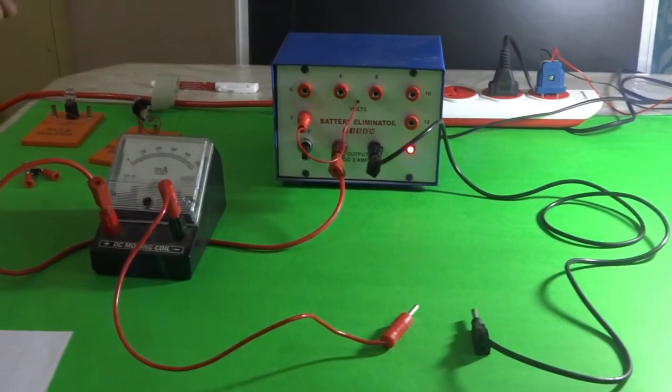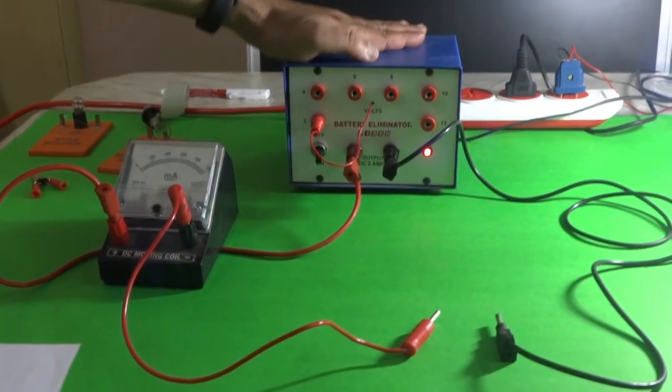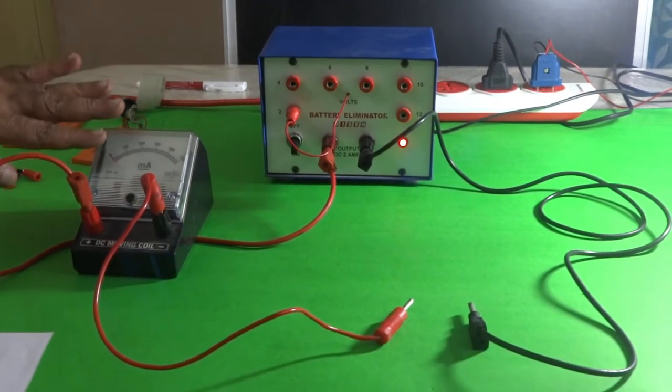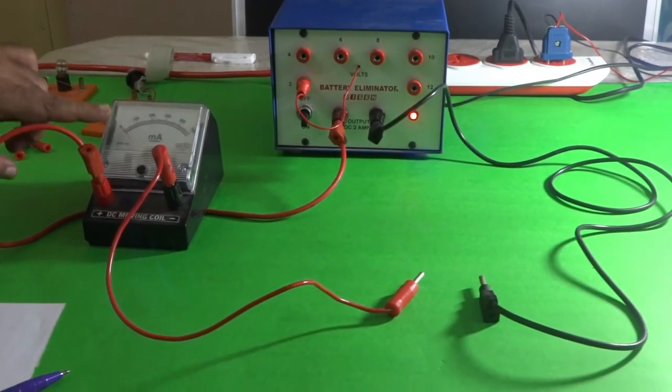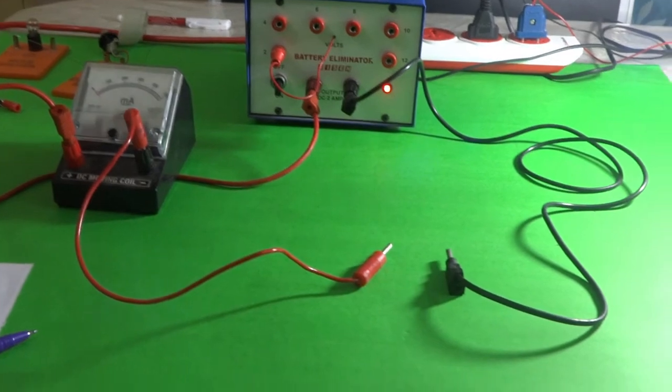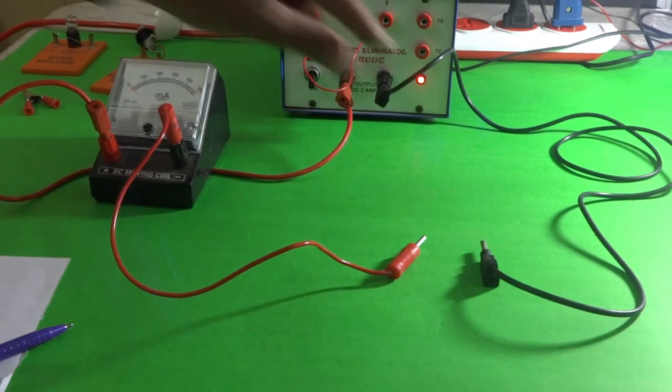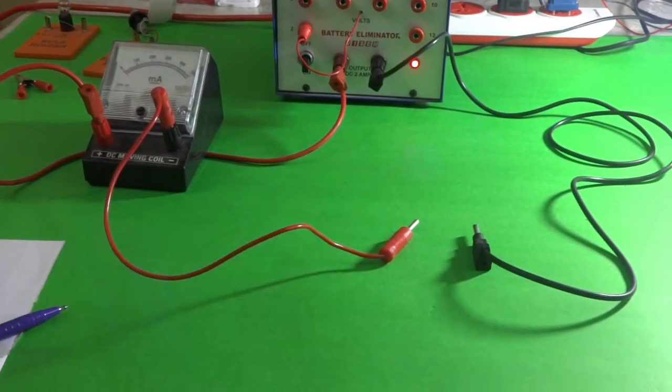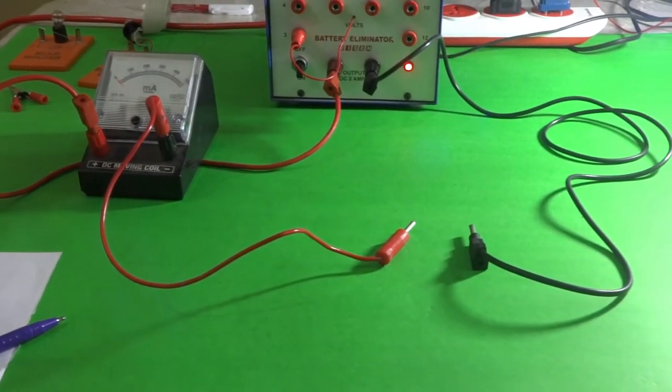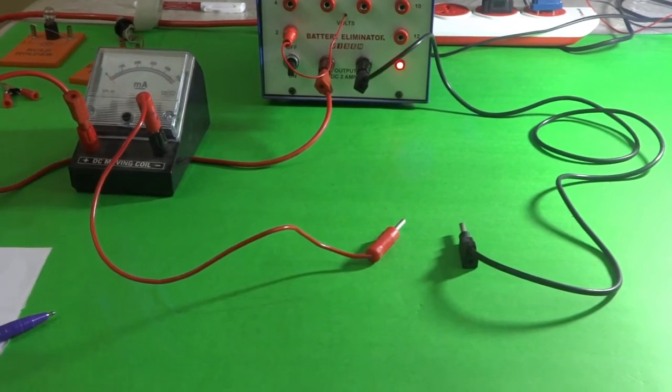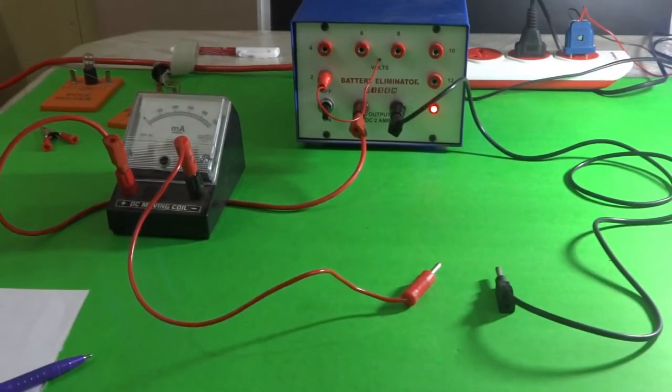In this activity, we have taken one battery eliminator to note down the current, a milliammeter, and two connecting wires. We have given a gap here. In this gap, we are going to connect two different kinds of bulbs and one specific resistance wire.